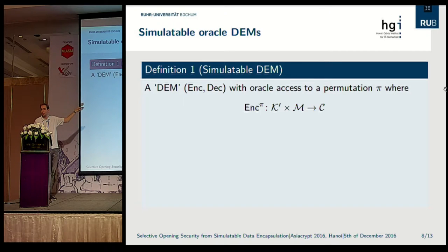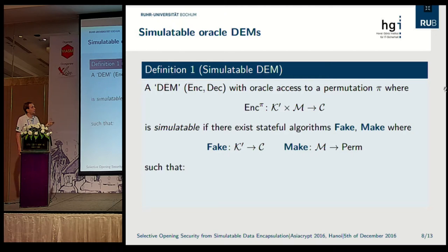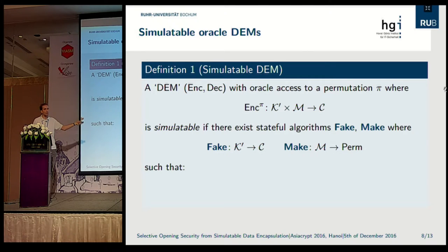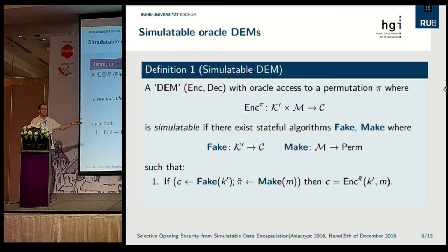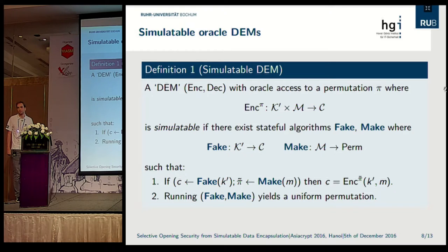This leads to a definition we call an 'oracle DEM' — a DEM with oracle access to the block cipher. It takes as input the additional key material and the message and outputs the ciphertext. We say such a DEM is simulatable if we have additional stateful algorithms 'fake' and 'make': fake obtains the additional key material but not the message and outputs a ciphertext; later, make receives information from fake and takes as input a message and is supposed to output a permutation. The requirement is that if we run fake on some key k' to obtain a ciphertext c, and then run make to obtain a permutation π̃, then running DEM encryption with access to π̃ on message m yields c. Additionally, the permutation output by make should be uniform, so we can patch it into the ideal cipher.